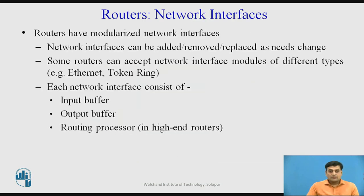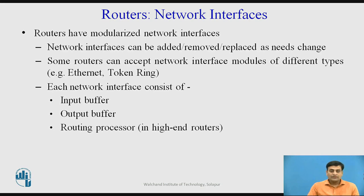Routers have modular network interfaces that can be added, removed, or replaced as needs change. Some routers accept network interfaces of different types, so using the same network interface we can connect both Ethernet LANs and Token Ring LANs. Each network interface consists of an input buffer, output buffer, and routing processor. In high-end routers, routing processors are provided separately; for low-end routers, the routing processor is shared.